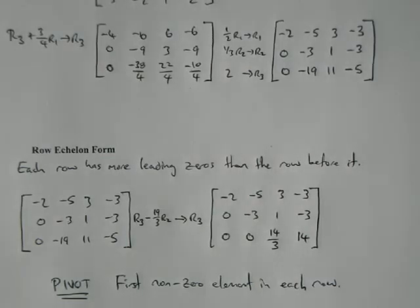So negative 2, negative 5, 3, negative 3, 0, negative 3, 1, negative 3, 0, minus 19, 11, minus 5.